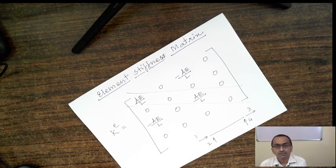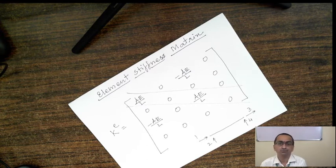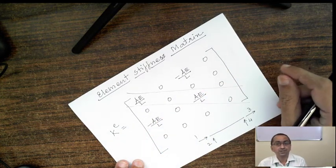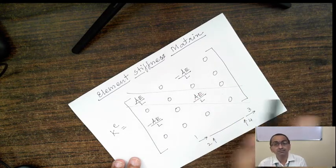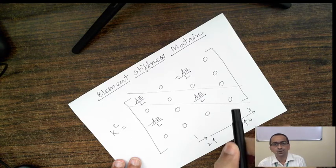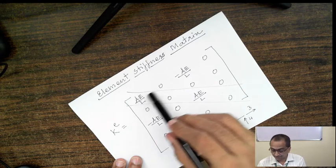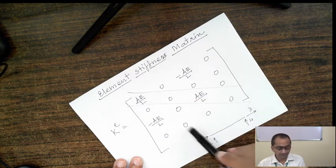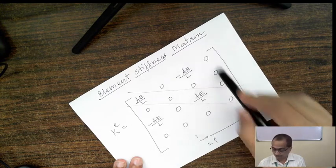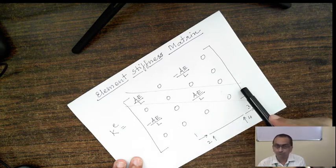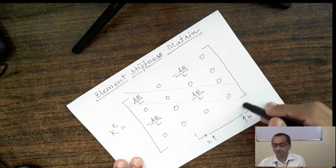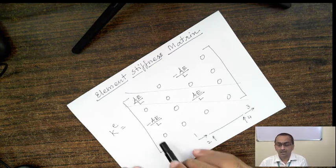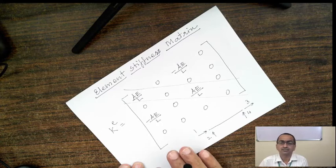There is an additional special property for the truss element stiffness matrix: the sum of any row or the sum of any column must equal 0. This property does not exist in the beam element stiffness matrix or in the frame element stiffness matrix — it is unique to the truss element. Checking: first row sum is 0, second row sum is 0, third row sum is 0, fourth row sum is 0 — all confirmed. This is the special property of the truss element stiffness matrix, and it is simpler to remember and work with than the beam element.